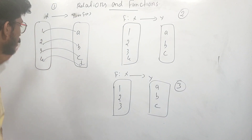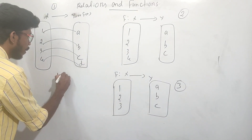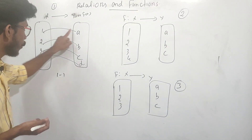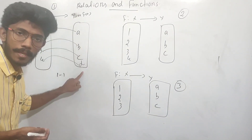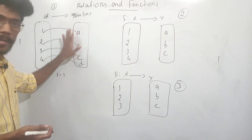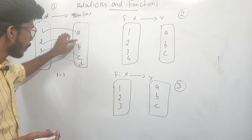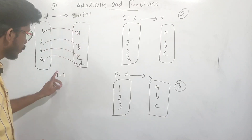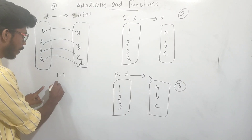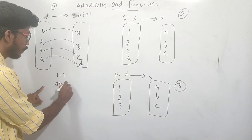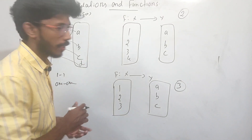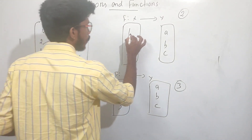What is written here is called a one-one function. If each element of a function has a unique image, then one element maps to one image. So this is called a one-one function.